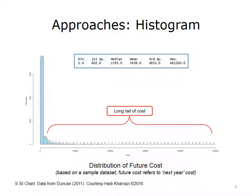A simple approach to visualize population health data is to construct a histogram of each of the variables. For example, if cost is the outcome variable, a histogram can quickly inform the analyst that cost is not normally distributed in the population. This histogram shows the distribution of cost in a large insurance claims database. As evident by the histogram's first bar on the left, a large denominator of the population has minimal cost. Also, the histogram shows that there are fewer and fewer patients as the cost increases from left to right. Indeed, there are only a handful of patients with an annual cost higher than $100,000. A summary statistic included on the top of the histogram also shows the fact that the cost data is highly skewed and has a very long tail.